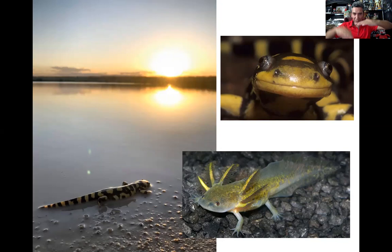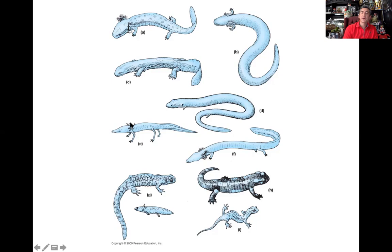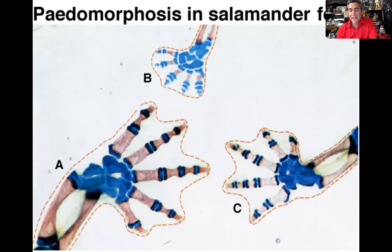Some pedomorphic forms we see include mud puppies or water dogs — their whole life they stay pedomorphic. There are also sirens with only two legs, lacking the back legs. Amphiumas have four legs. Cave salamanders are very strange as well — all pedomorphic forms. Paedomorphosis has an impact not just on gills but also on bone density. The transition from the larval aquatic form to the terrestrial adult form enables more ossification on the bones.